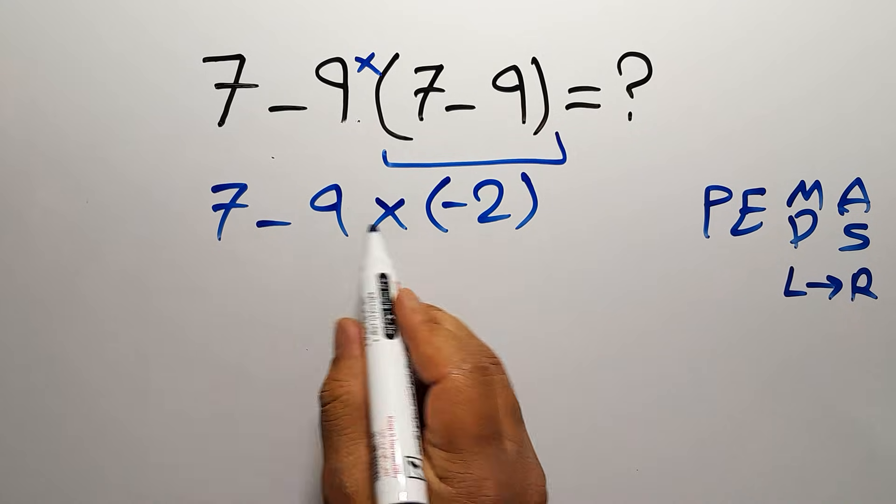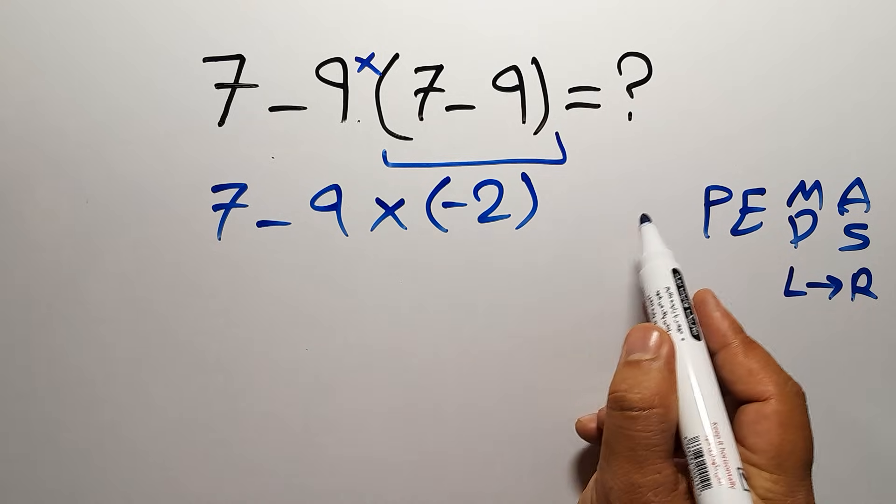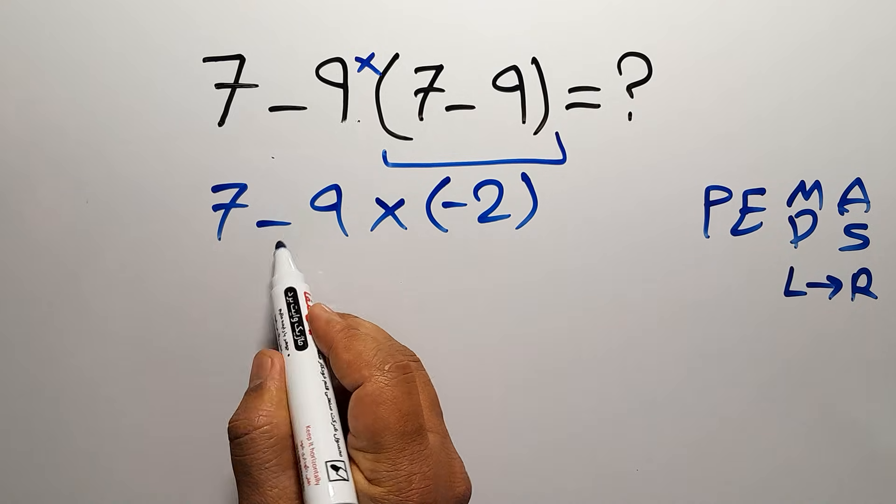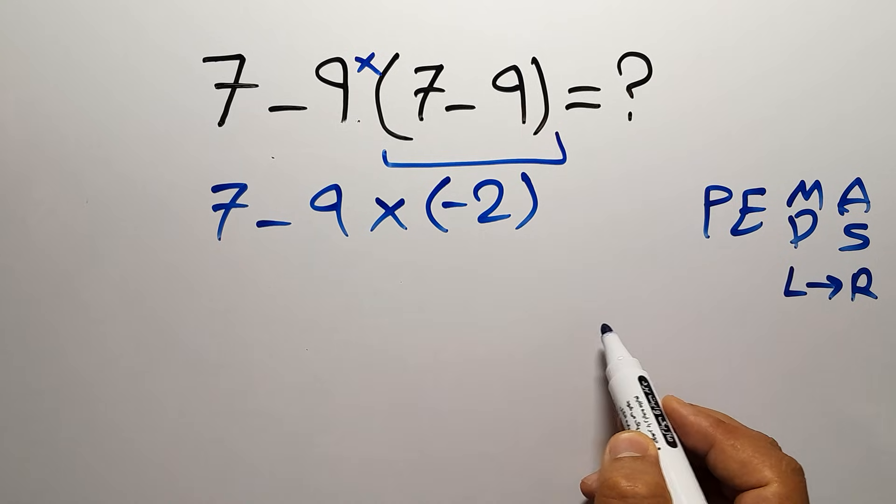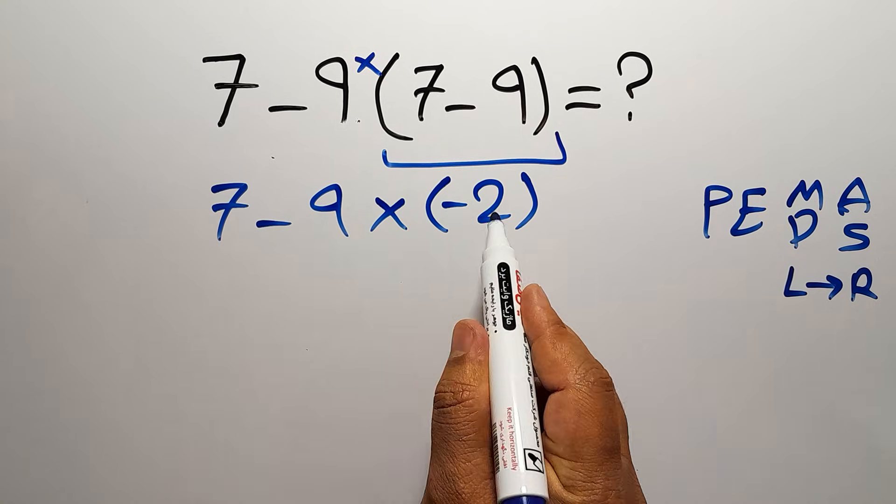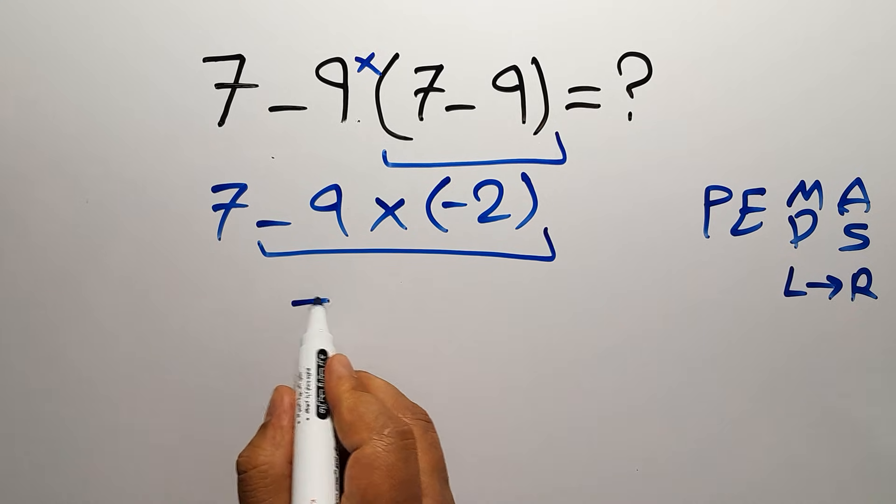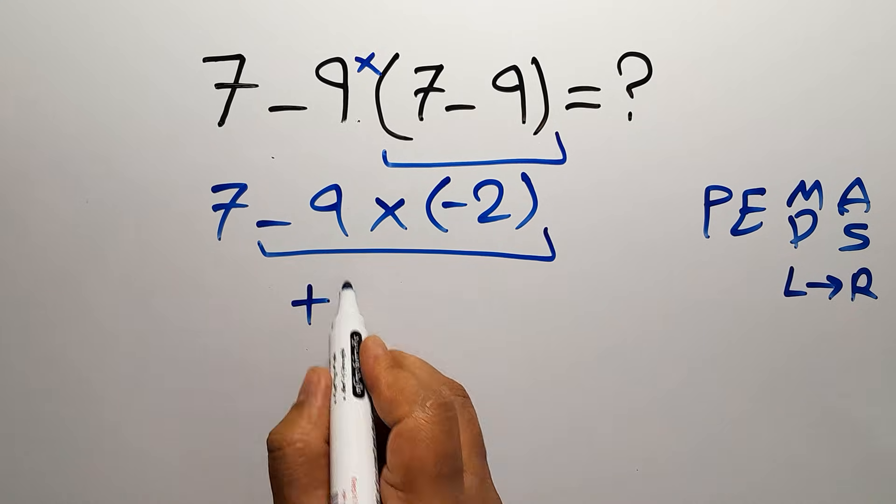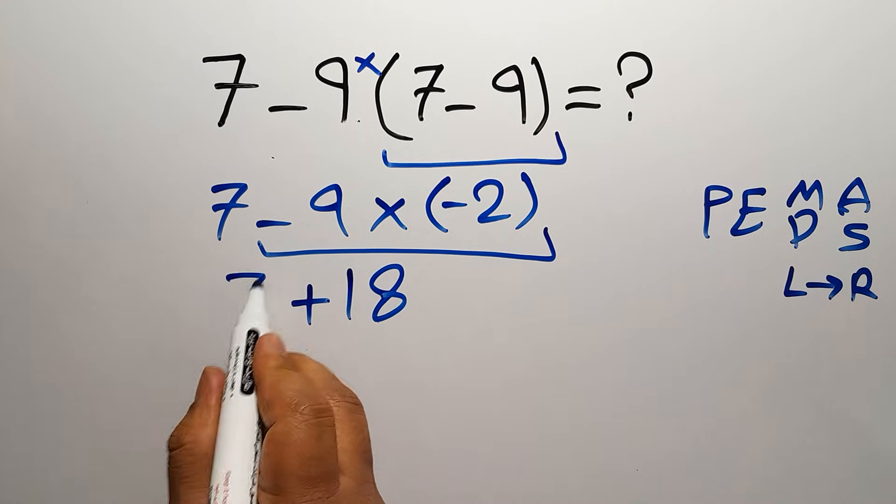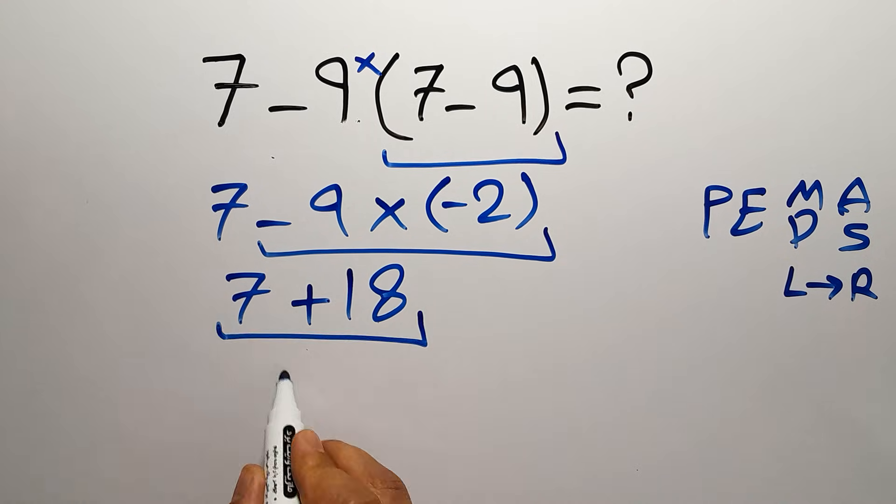Now we have to do this multiplication because multiplication comes before subtraction in PEMDAS. So negative 9 times negative 2 which gives us plus 18. So 7 plus 18 and this is equal to 25.